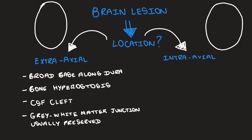The fourth sign to look for in deciding whether a lesion is intra-axial or extra-axial is to look at the grey-white matter junction. In an extra-axial lesion, this will usually be preserved. The most common extra-axial lesion you are going to come across is a meningioma. Meningiomas can be partially or fully calcified, and when contrast is administered, they avidly enhance. They also usually have a dural tail.